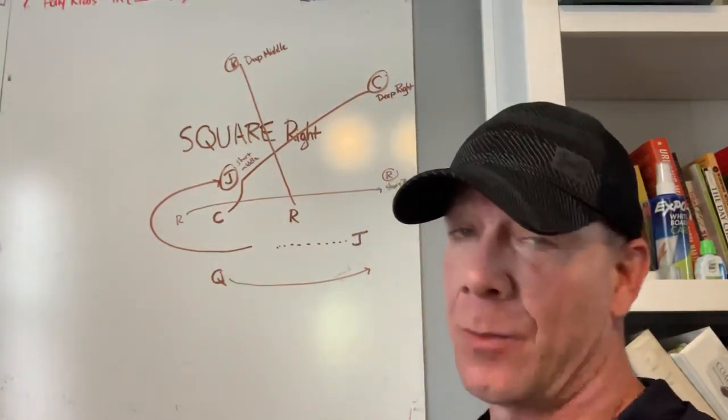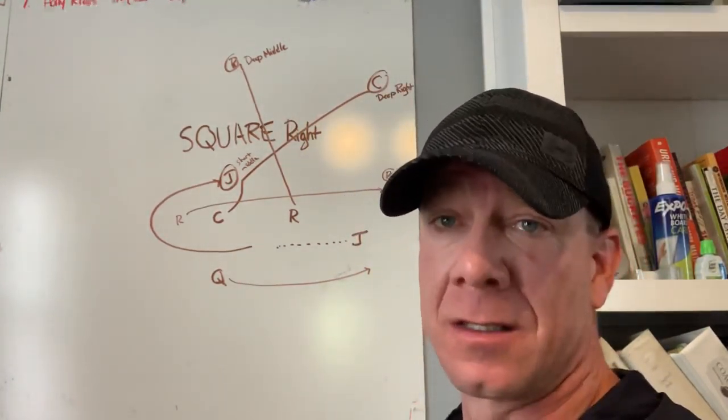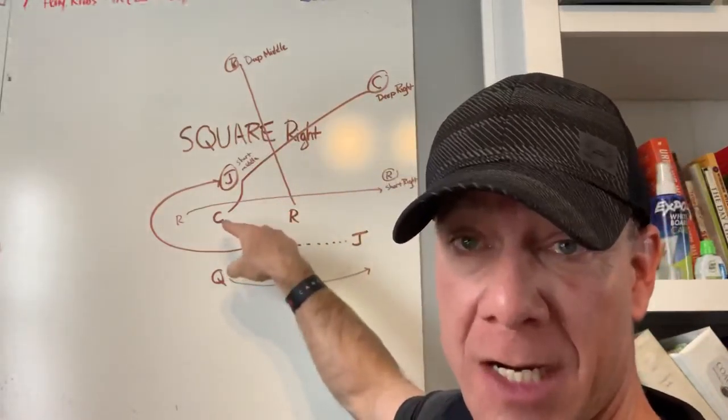All right, Bengals, coaches, and players. Now we have square. So I'm going to call square right or left. In this case, this is square right. And all we're trying to do is get to having a square of receivers.